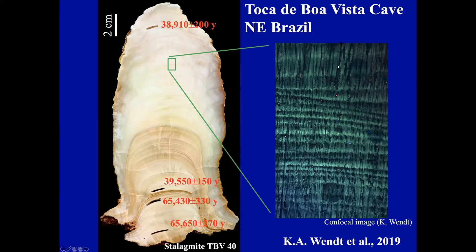Shown here are luminescent bands — annual bands. There are bunches of annual bands; it's not continuous all the way through, but there are annual bands in this and in many speleothems.